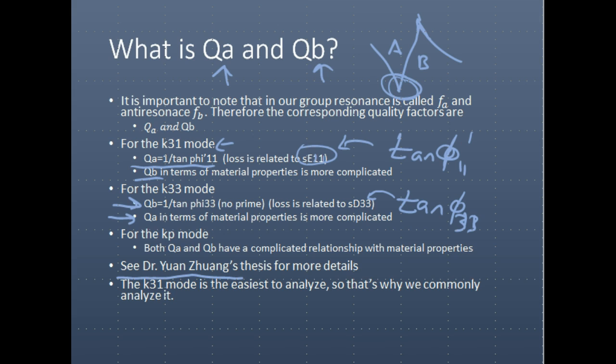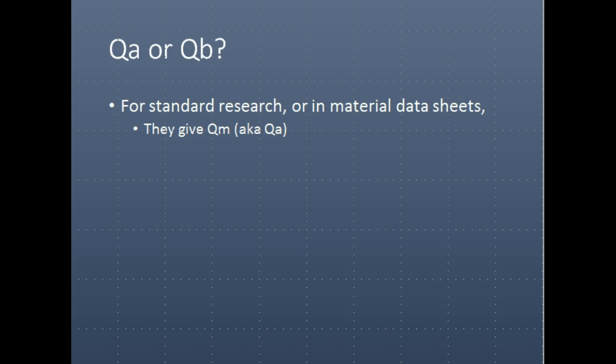So K31 is the easiest mode to analyze. As mentioned, QA and QB — for standard research they report QM, measured however they wanted using the IEEE standard or using the other method, which is the 3 dB bandwidth.